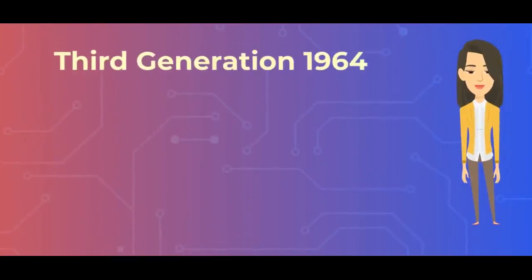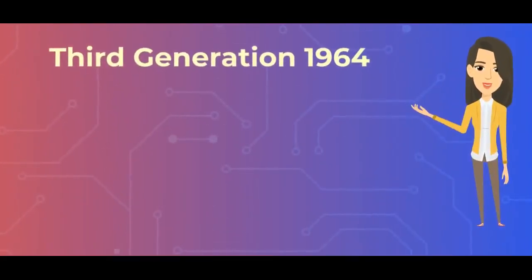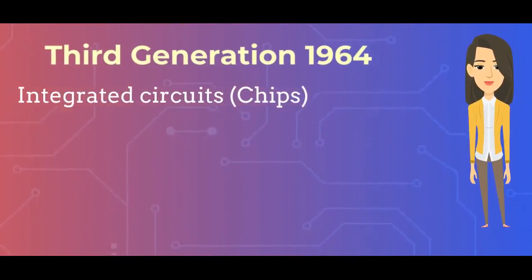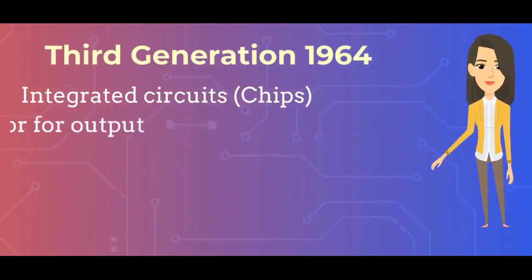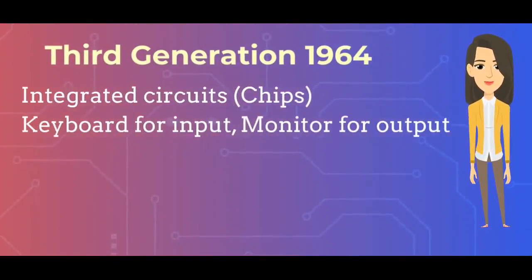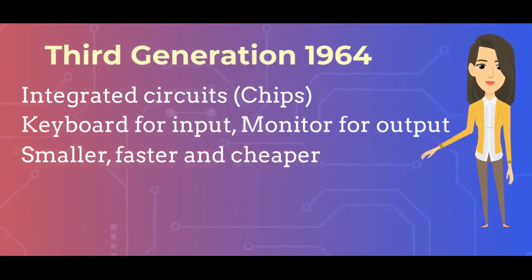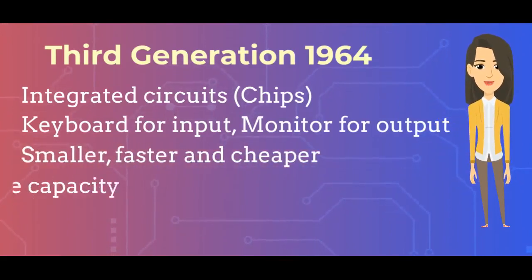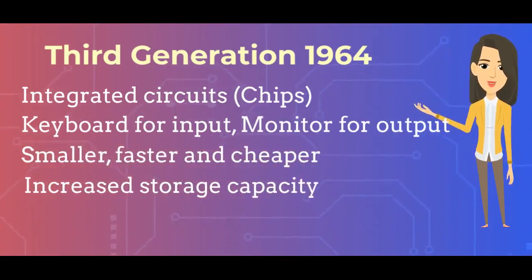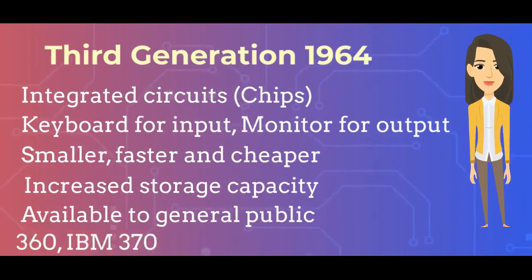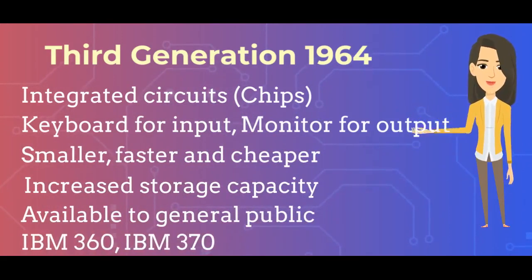Third Generation Computers, 1964: They used integrated circuits. They used keyboard for input and monitor for output. They were smaller, faster and cheaper, with increased storage capacity, and became available to the general public. IBM 360 and 370 series are examples.